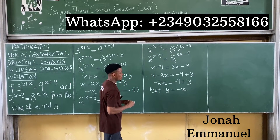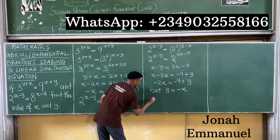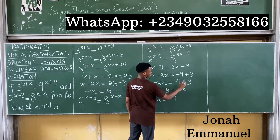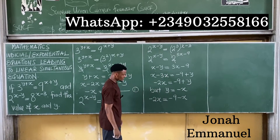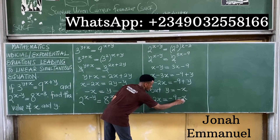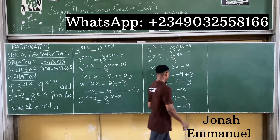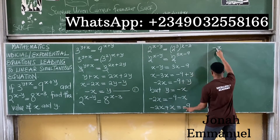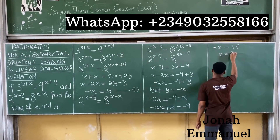Since y equals minus x, in place of y I'll put minus x. This now becomes minus 2x is equal to minus 9 plus minus x. Collecting like terms: minus x comes over as plus x, giving minus 2x plus x equals minus x, and minus x is equal to minus 9. The minuses cancel, so x is equal to 9.